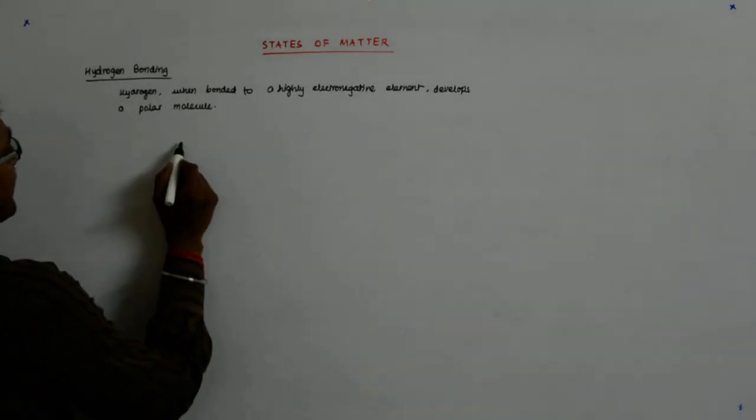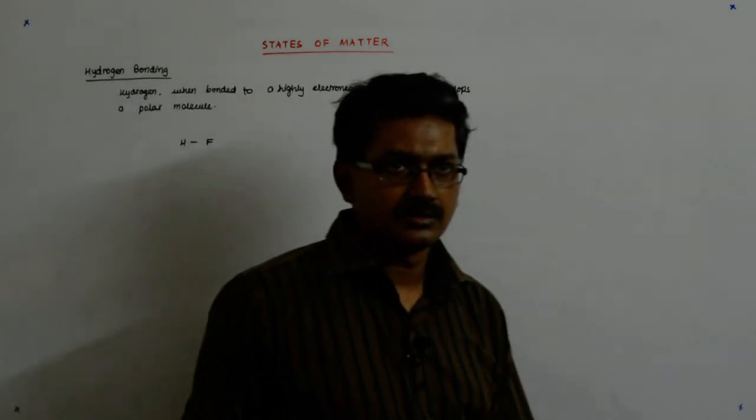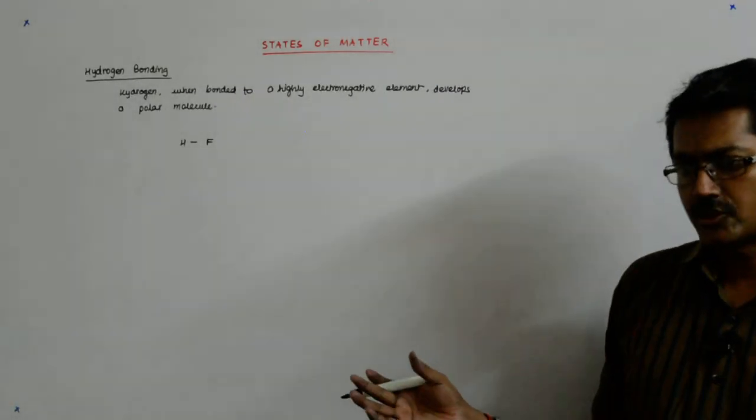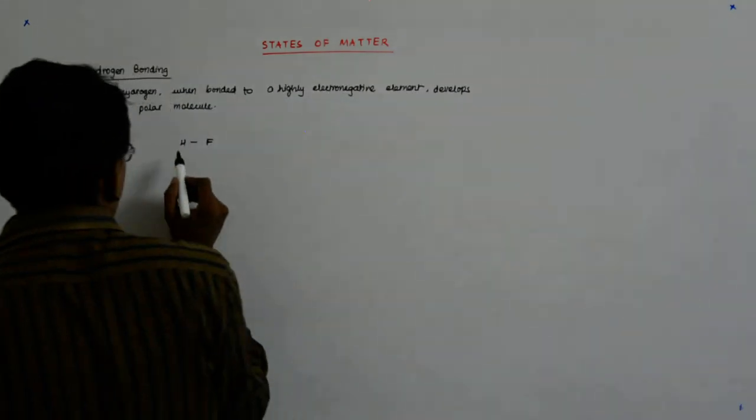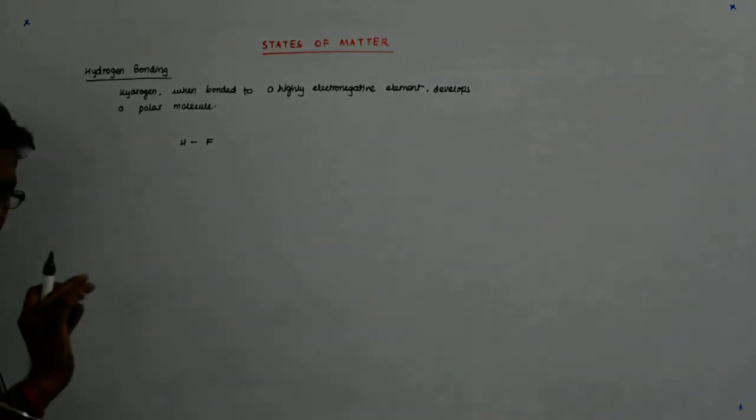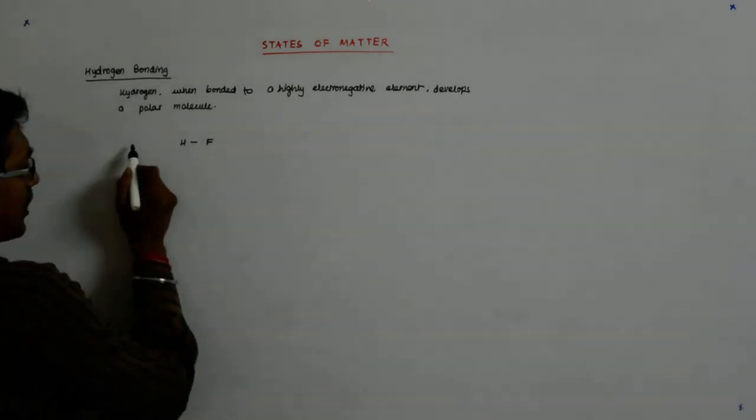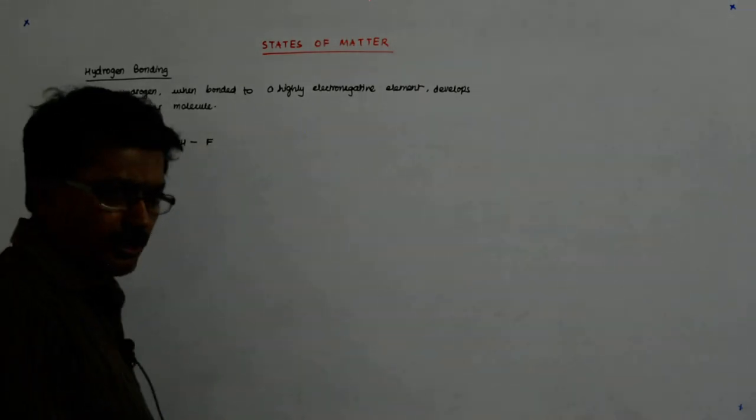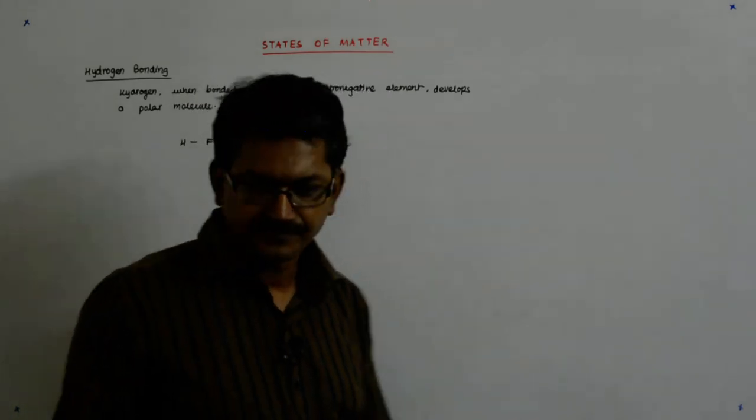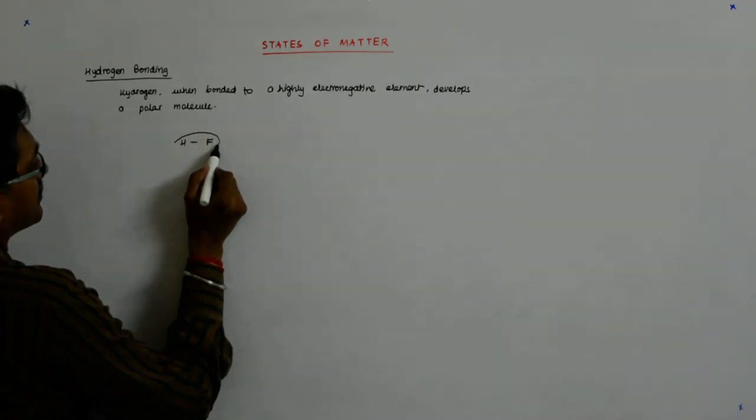So what happens? Say, if H is bonded to F, due to the high electronegativity of F and a very small size of it, and you must know that the electronegativity of fluorine on the Pauling scale is the highest, it is plus 4. So what it does? This fluorine pulls a lot of the electron cloud to itself. So it actually becomes something like this.